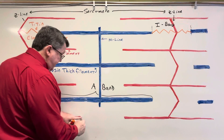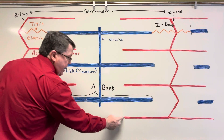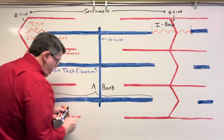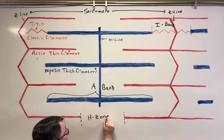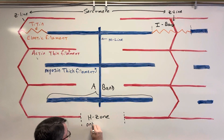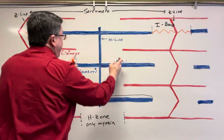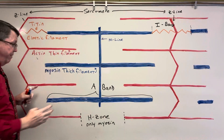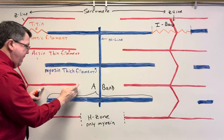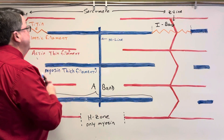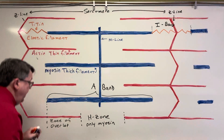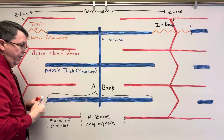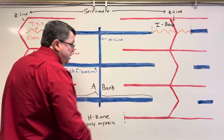The next area goes from the end of actin to the other end of actin within the same sarcomere — we call this the H-zone. The H-zone only contains myosin. Then we have the zone of overlap, where the myosin and actin overlap each other. The zone of overlap contains both actin and myosin. One other thing: as the muscle contracts and relaxes, the size of the H-zone changes.